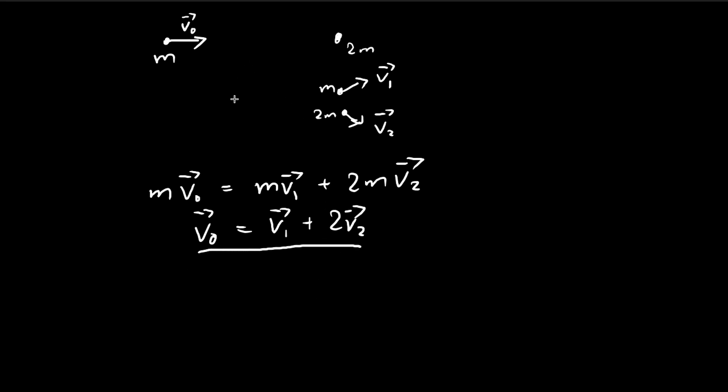The second relationship we can come up with is using energy, because we know that the collision is elastic. In this case, this is a magnitude, or you can say that this is a dot product between the vectors themselves. So 1/2 m v0 squared equals 1/2 m v1 squared plus 1/2 times 2m v2 squared. We can cross away that 1/2 m, and in the end we get v0 squared equals v1 squared plus 2v2 squared.